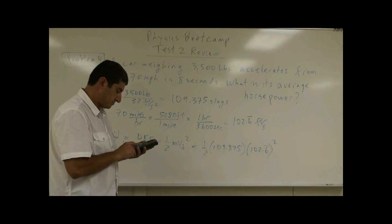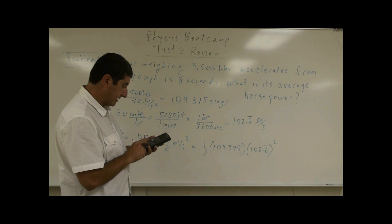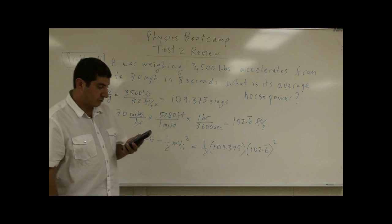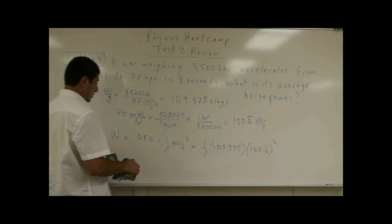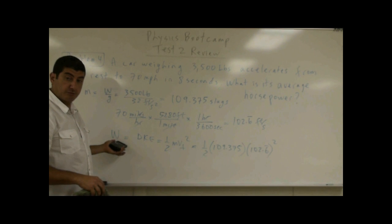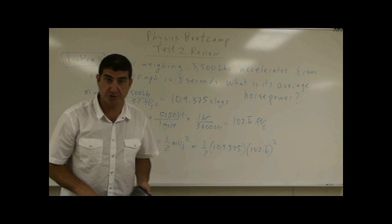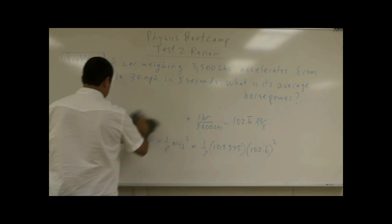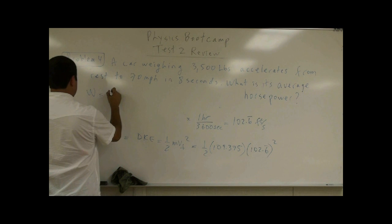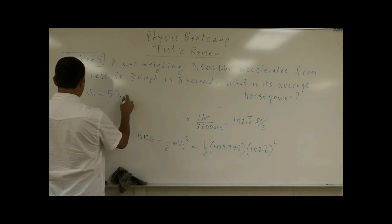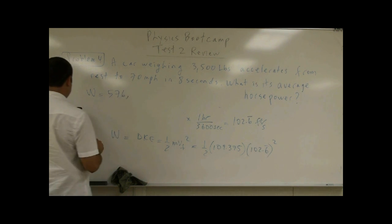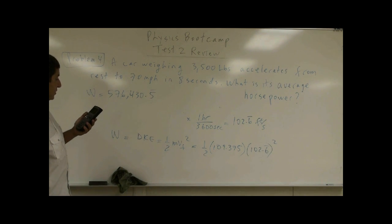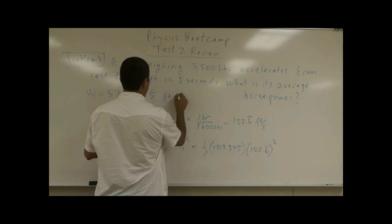So what are we going to get now? You square this, multiply it by 0.5, multiply it by 109.375. You get a huge number. This huge number, what are the units of this huge number? Well, when you do this, the units of work in the British system, it's going to come out to be foot pounds. So you're going to come up with work is 576,430.5 repeating fives foot pounds.